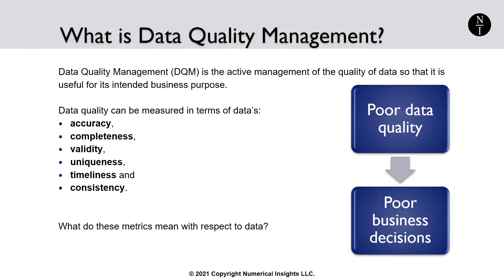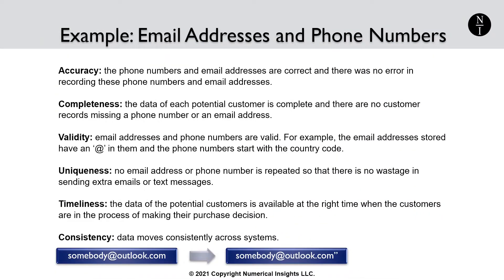Data quality can be measured in terms of multiple things: data accuracy, completeness, validity, uniqueness, timeliness, and consistency. But what do all these metrics mean with respect to data? Let's understand them with an example. Suppose a business has phone and email data in a spreadsheet for a number of potential customers whom the company wants to target using an automated text and email marketing campaign.